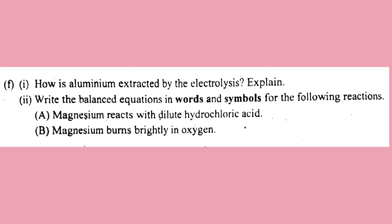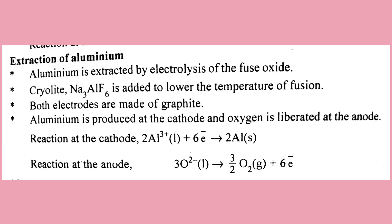Number two: how is aluminium extracted by electrolysis? Aluminium is extracted by electrolysis; this is the reaction shown in the equation.